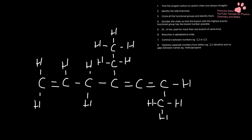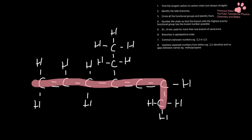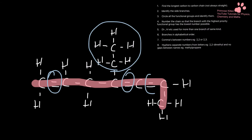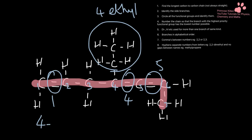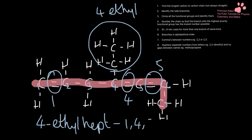Next one. My longest carbon chain goes along here. Looking at my functional groups, I've got a double bond there, a group here, one here, and one here. Numbering from the left: one, two, three, four, five, six, seven. That gives me a double bond on one, a group on four, a group on five, and a four-ethyl. So that gives me 4-ethylhepta-1,4,5-... [working through numbering].